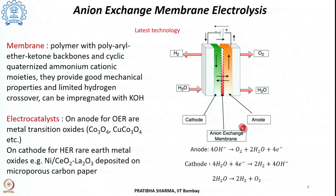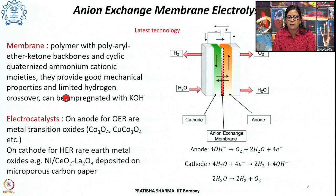The electrons pass through the external circuit, and the overall reaction is water splitting into hydrogen and oxygen. The anion exchange membrane allowing hydroxyl ions to pass through is usually a polymer with a polyaryl ether ketone backbone and cyclic quaternized ammonium cationic moieties, providing good mechanical properties and limited hydrogen crossover. Ionic conductivity can be improved by impregnating with KOH, but this affects durability.